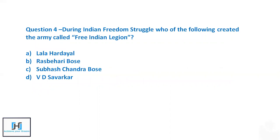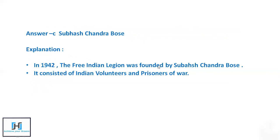Question 4: During the Indian Freedom Struggle, who created the army called the Free India Legion? Options are Lala Hardayal, Rash Behari Bose, Subhash Chandra Bose, or Vinayak Damodar Savarkar. Note that Savarkar established the society called Abhinav Bharat. The Free India Legion was established by Subhash Chandra Bose during the Second World War in Germany, composed of Indian prisoners of war. Netaji's title also came from this context.